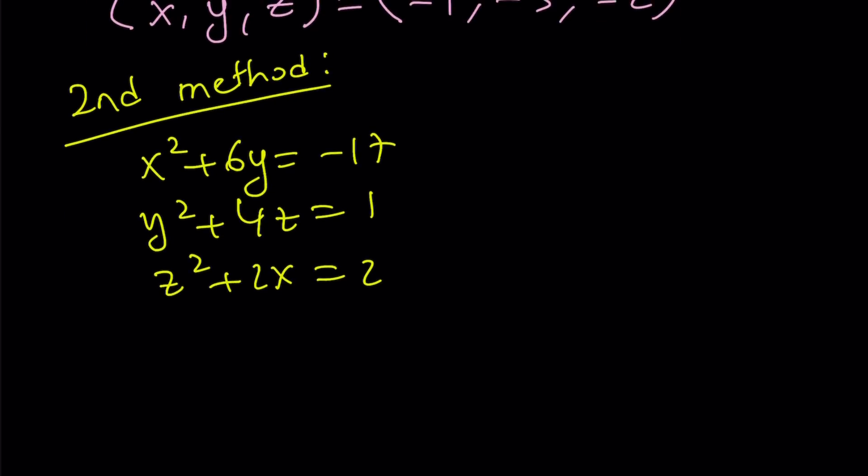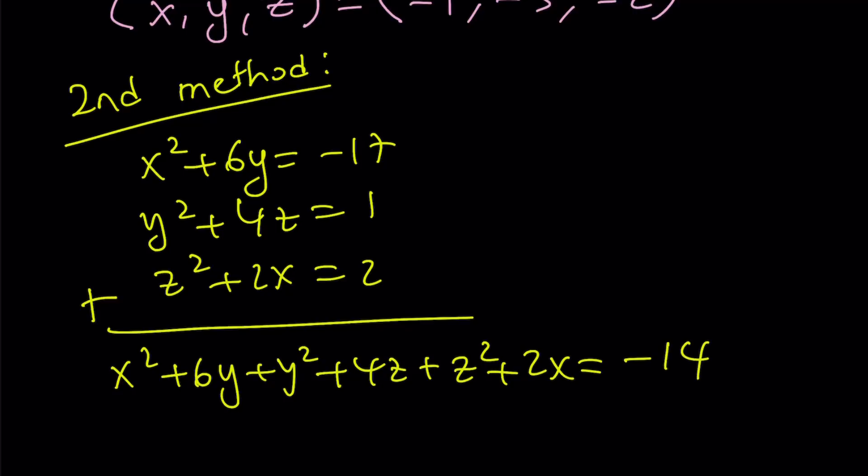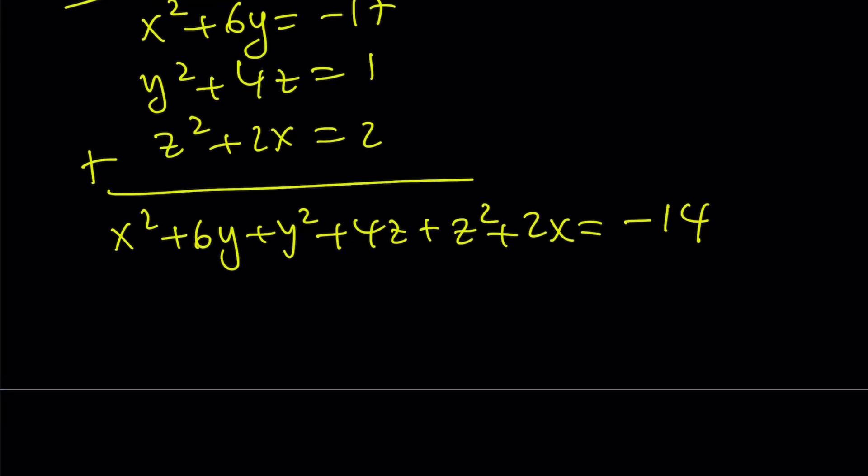Let me rewrite those: x squared plus 6y is equal to negative 17, y squared plus 4z is equal to 1, and z squared plus 2x is equal to 2. So here's what I'm going to do for my second method. I'm going to add these equations up and get the following: x squared plus 6y plus y squared plus 4z plus z squared plus 2x is equal to negative 17 plus 3, which is negative 14.